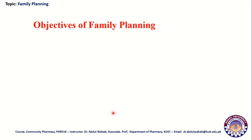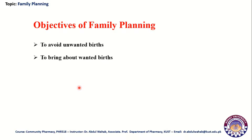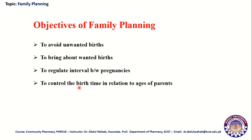The objectives of family planning are: first, to avoid unwanted births; second, to bring about wanted births; third, to regulate the interval between pregnancies; fourth, to control the birth time in relation to ages of parents; and fifth, to determine the number of children in the family.